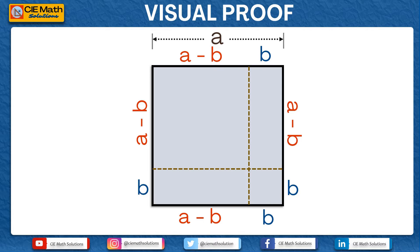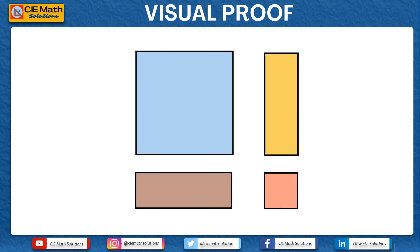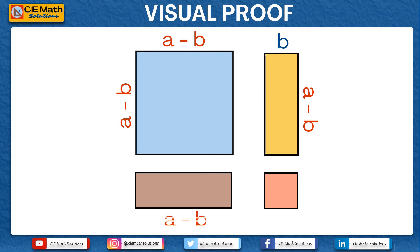Let us put a color to each of the regions formed. We have one square colored blue, two rectangles, and one small square colored pink. Now let us separate each of these regions and label the sides of each figure in terms of a and b. The big blue square has sides a minus b and a minus b. For the rectangle on the upper right, the sides are a minus b and b. For the rectangle on the lower left, the sides are b and a minus b.